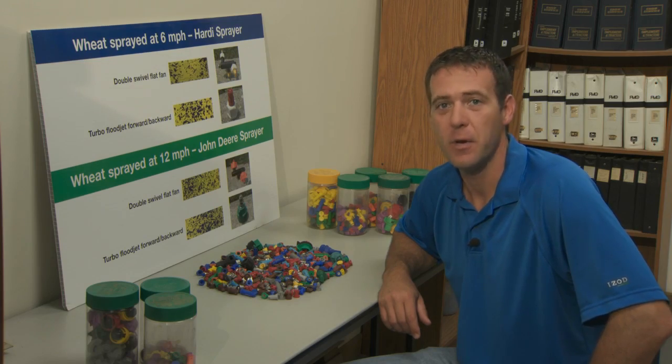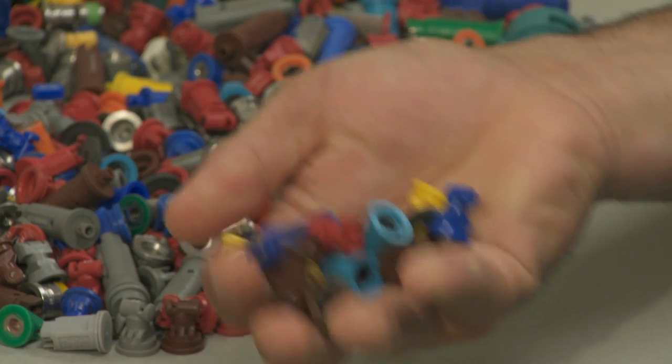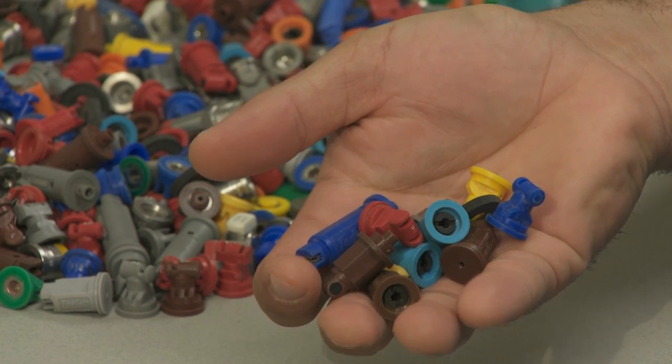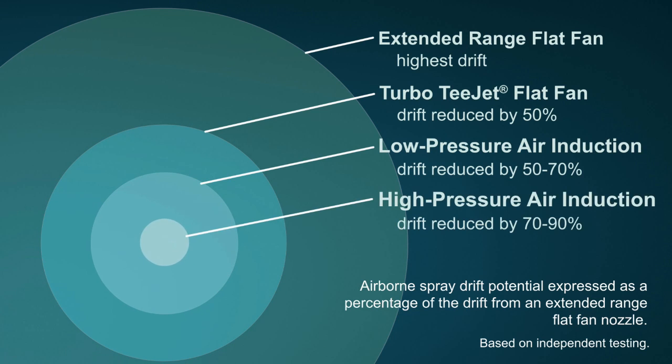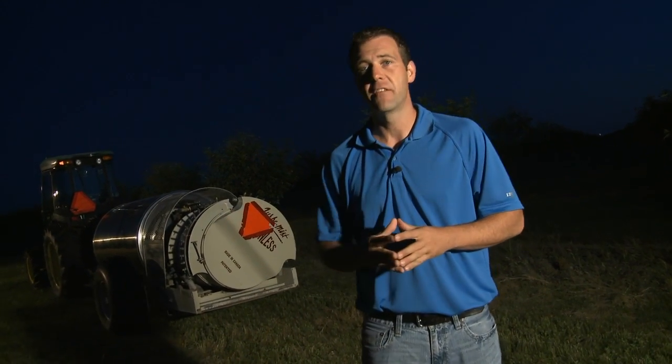Perhaps the easiest drift-reducing modification is changing nozzles. There are lots of choices, but they're not created equal. This graph shows the drift potential expressed as a percentage of the drift from an extended range flat fan nozzle. This sprayer will produce fine droplets under high powered lights to show you what you can't see during the day. Air induction nozzles have already been widely adopted on boom sprayers. Here's the same sprayer applying a similar rate but using low drift air induction nozzles. Air induction nozzles don't eliminate drift or permit applicators to spray in poor conditions, but they reduce drift significantly.